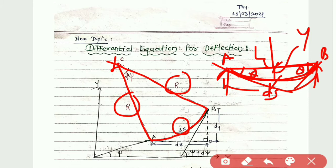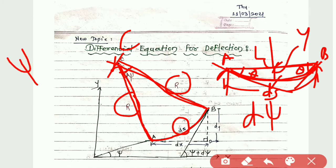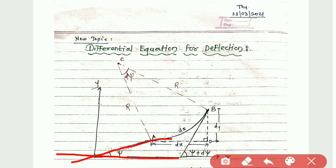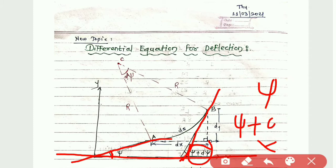From A, if I consider this is the X-axis, then the angle between the tangent and the horizontal becomes ψ. Similarly, when we draw the tangent from B, it will meet the horizontal X-axis, and the angle becomes ψ + dψ. So ds is the length of the arc.